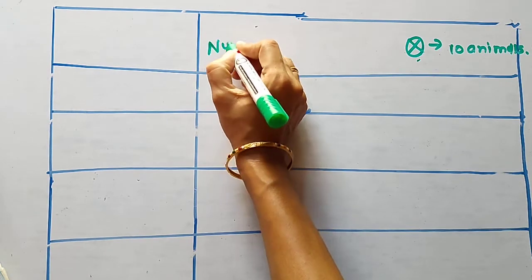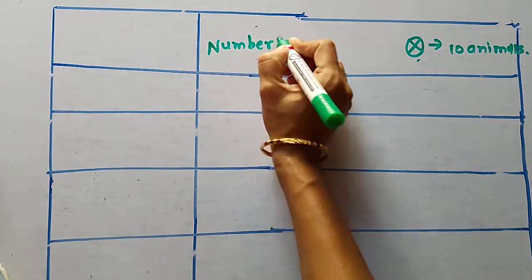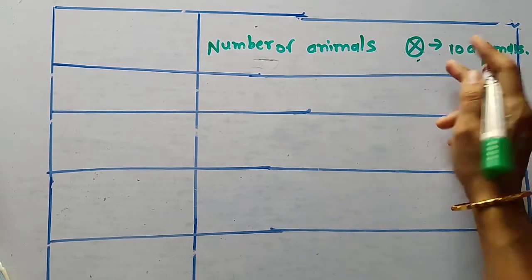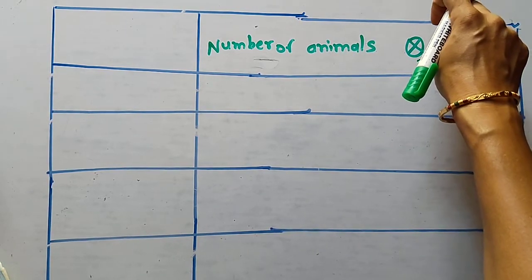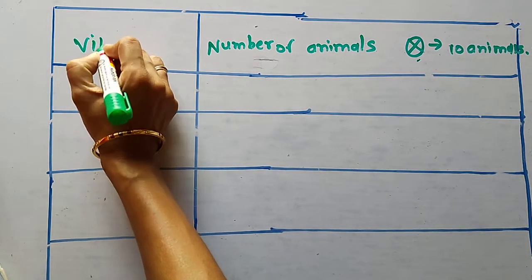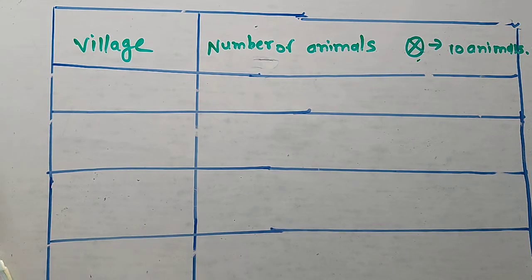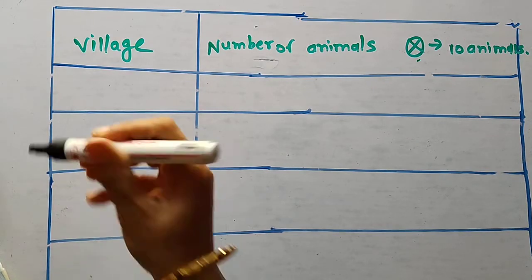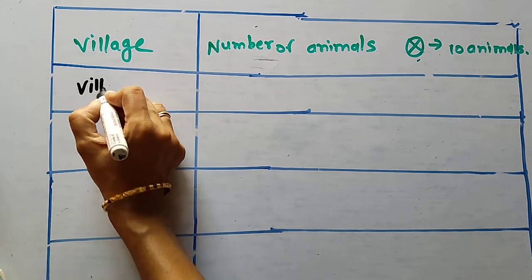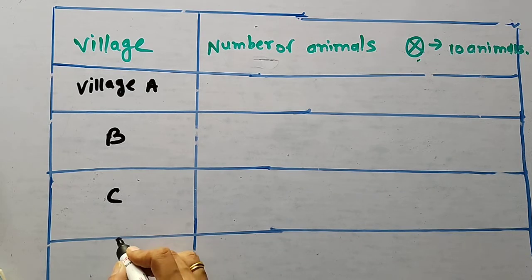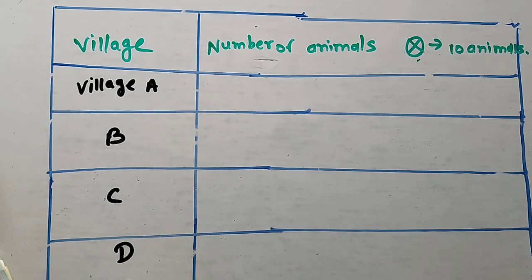Here we write 'Number of Animals' as the column heading. You can write it outside or inside the chart. And here you have to write 'Village.' Now write all the village labels: A, B, C, D, and E.